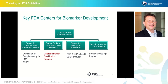Drilling down more specifically on the FDA, these are the key centers for biomarker development. The Center for Devices and Radiologic Health does the lion's share of in vitro diagnostic review and approval, including companion diagnostics, complementary diagnostics, pre-marketing authorizations, and 510K submissions. The Center for Drug Evaluation and Research, or CDER, houses the biomarker qualification process. The Center for Biologics Research, or CBER, reviews some PMAs or 510Ks related to CBER blood products. And the Oncology Center of Excellence has a Precision Oncology program to guide the development of biomarkers in precision oncology.